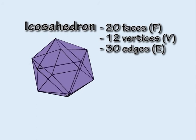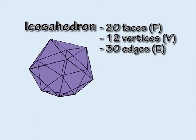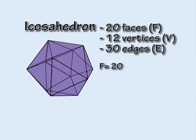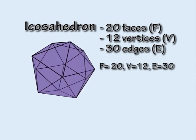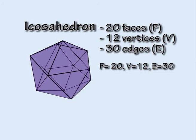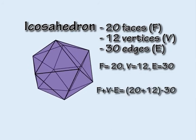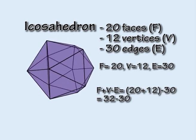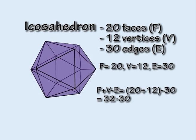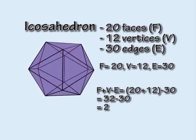Or applying the formula to the icosahedron, F equals twenty, V equals twelve, and E equals thirty. So according to Euler's formula, F plus V minus E equals thirty-two minus thirty, which still equals two.